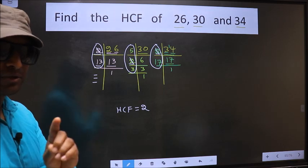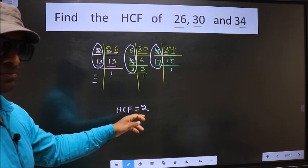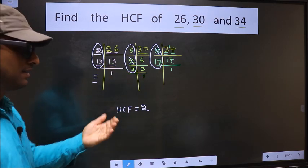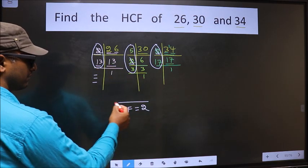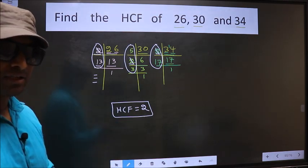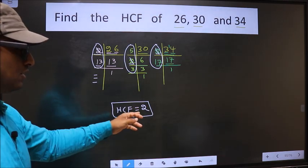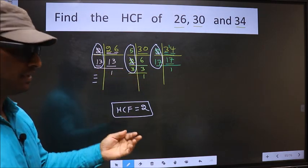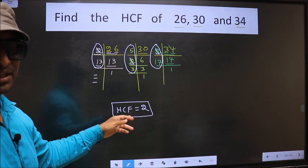Therefore, we have only one number 2, present in all the 3 places. Therefore, 2 itself is our HCF. I repeat, we have only one number 2, present in all the 3 places. Therefore, 2 itself is our HCF.